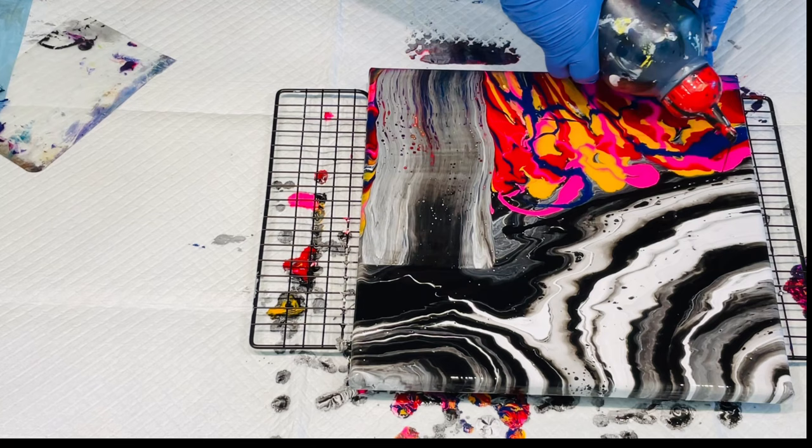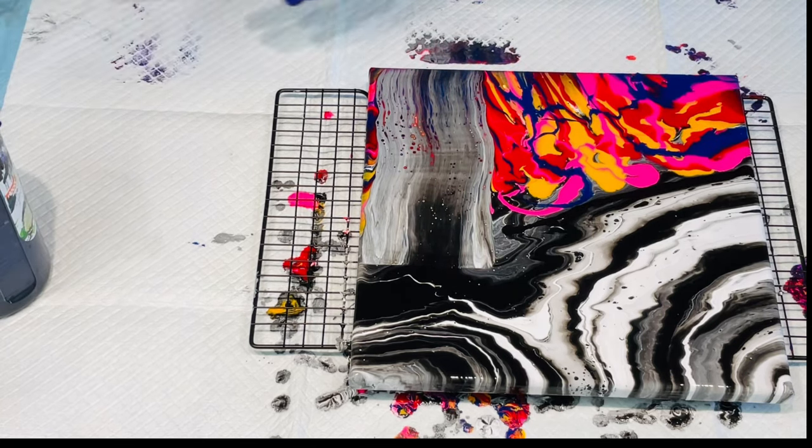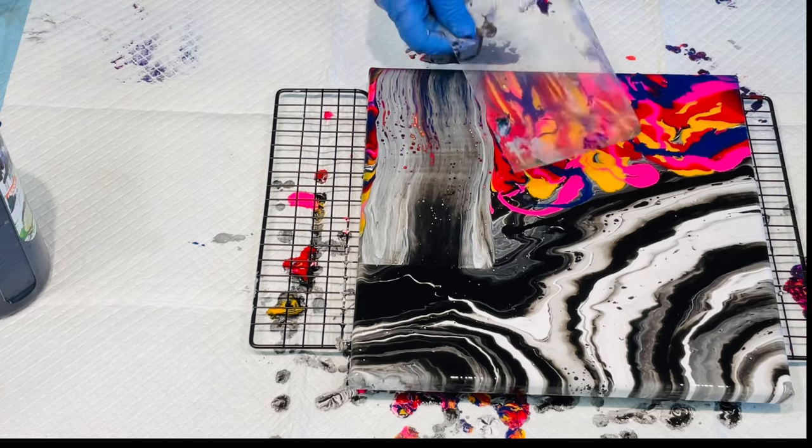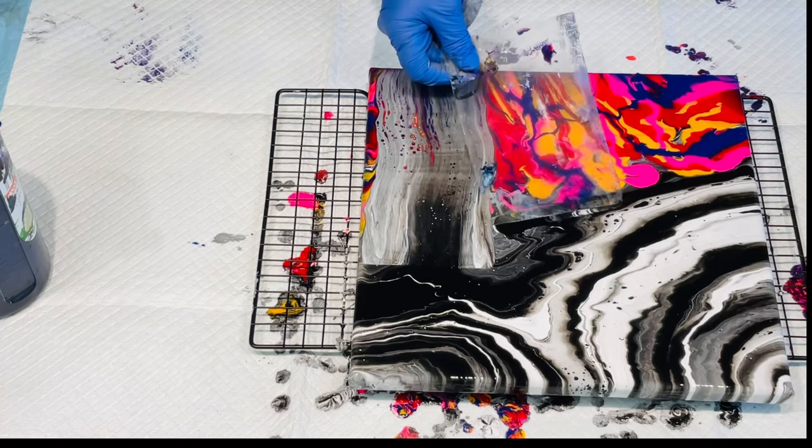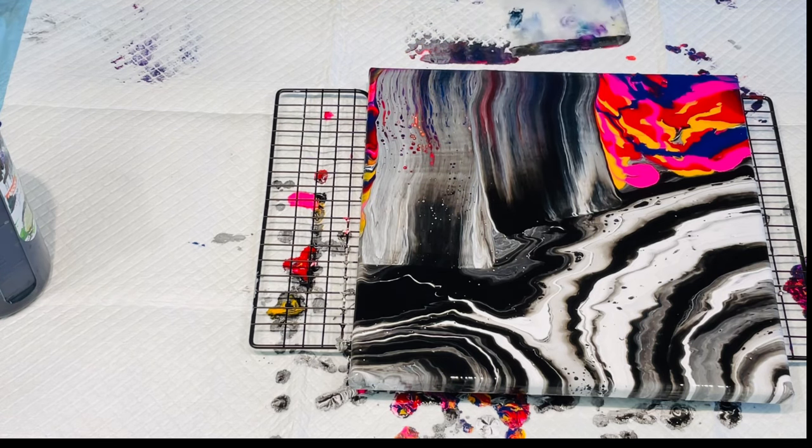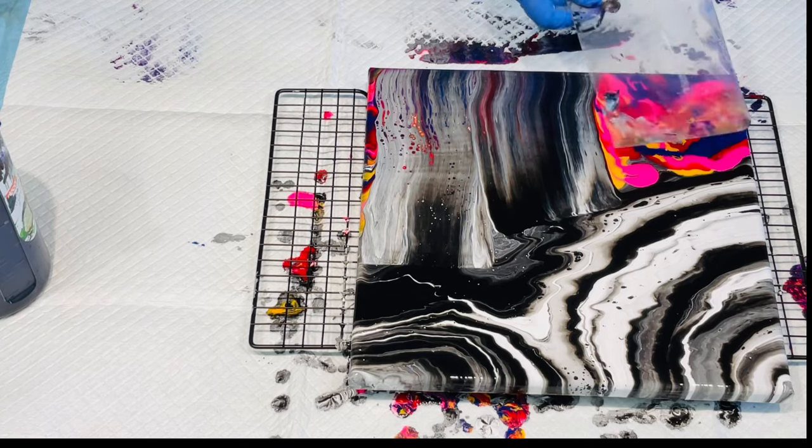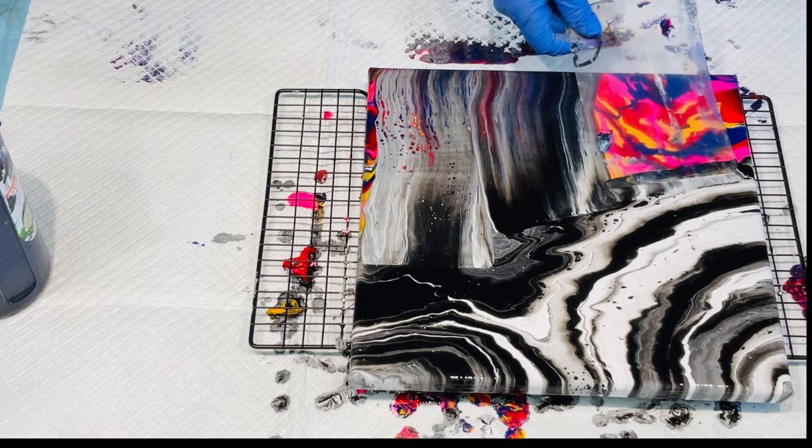I think that'll be okay. I think I just need to do a separate line of my black. This has just got my normal pouring medium in it, it hasn't got anything special. So I'm just going to swipe that down, just the black.